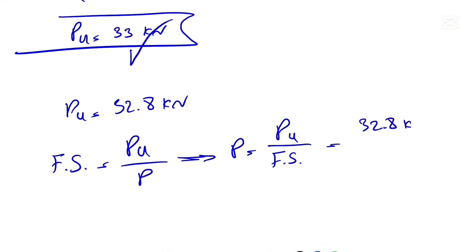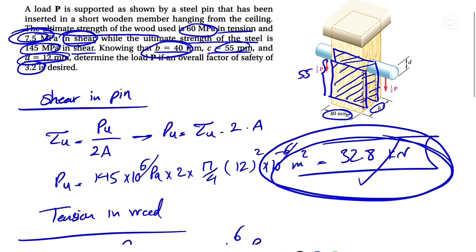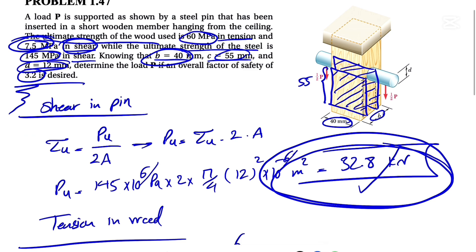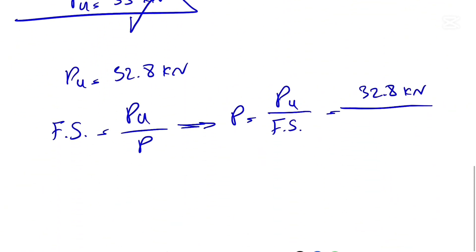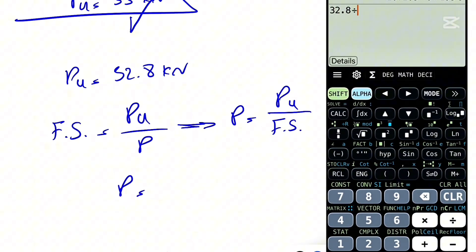32.8 kilonewtons, and the factor of safety was in the last line of this question: 3.2. So the P that we're going to get is 32.8 divided by 3.2, which equals 10.25 kilonewtons. That's the final answer for this question.